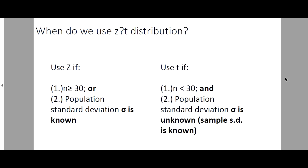We will use T if n is less than 30 and the population standard deviation is unknown. In this case, if the population standard deviation is unknown, we can use the sample standard deviation, which is known because our sample size is given.